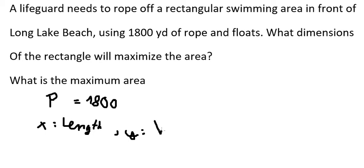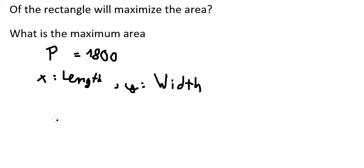y is about the width. So the formula of perimeter of the rectangle should be about 2x plus 2y equals 1800.